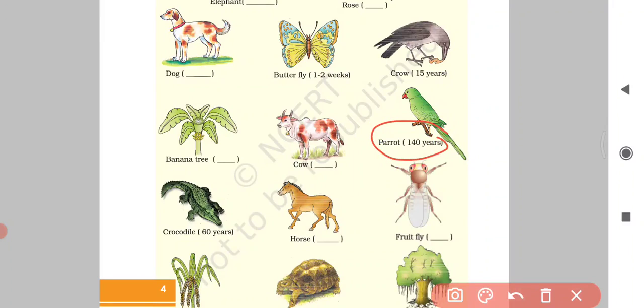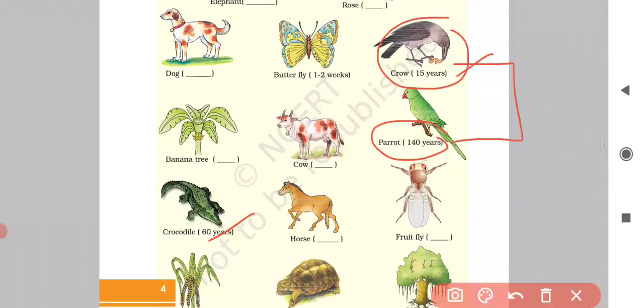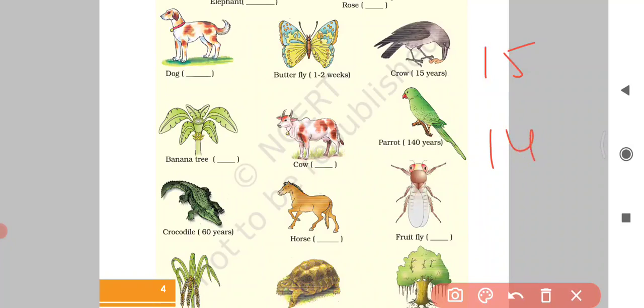I think this is the longest living bird in the bird species all over the world. Crocodile has 60 years and crow has 15 years. What is the difference between the crow and the parrot? Here crow has only 15 and parrot has 140 years - what a big difference.